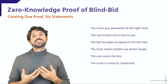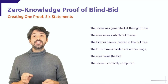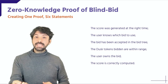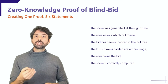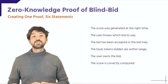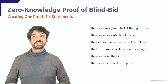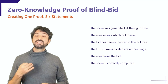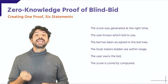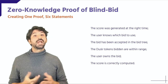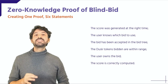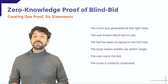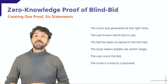The bidder must prove that the bid contains an amount of Dusk that is within the acceptable range for a bid. The bidder must prove to know the secret K embedded in the bid — knowing K proves ownership of the bid in the same way that knowing a password proves ownership of an account or service. Finally, the bidder must prove that the score has been calculated correctly by inputting the score generation function with the amount of Dusk equivalent to that staked in the bid. All statements are covered in a single proof that is easy to create and super fast to verify thanks to Dusk Network's Plonk library.